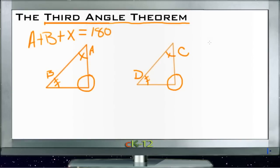We also know that on this triangle, C plus D plus X equals 180, because all triangles are 180 degrees.